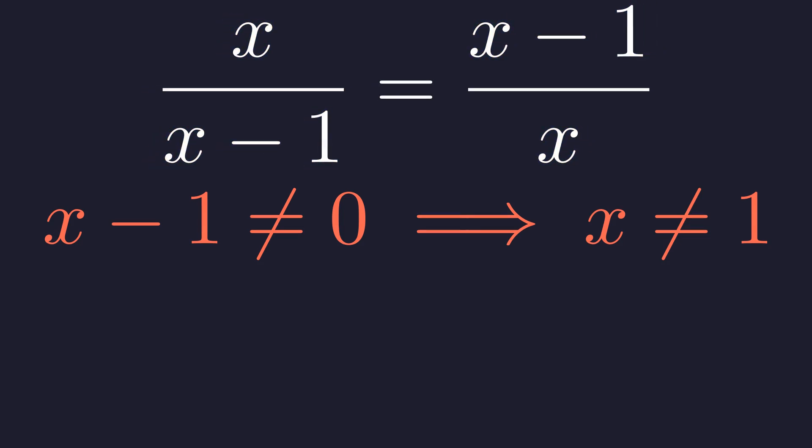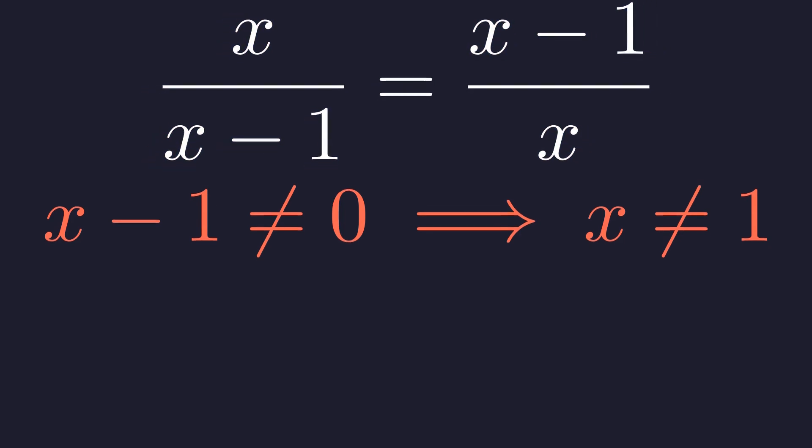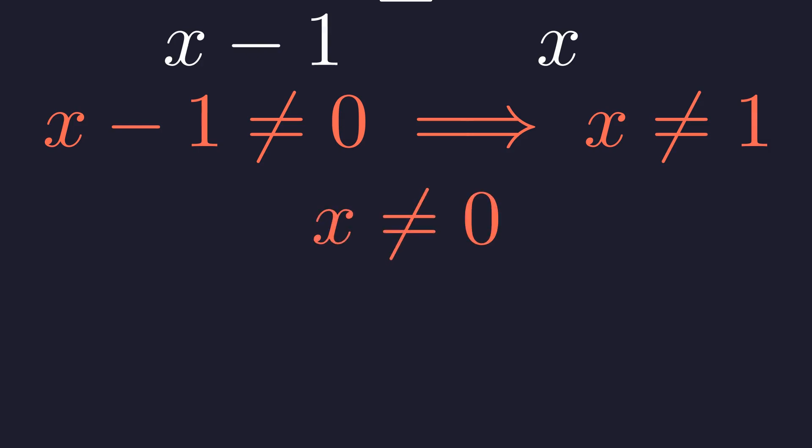On the right side, the denominator x itself cannot be zero. That gives us our second restriction. x cannot be zero. Keep both of these forbidden values in the back of your mind.